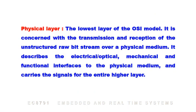The physical layer is the lowest layer of the OSI model. It is concerned with the transmission and reception of unstructured raw bit streams over a physical medium. It describes the electrical, optical, mechanical, and functional interfaces to the physical medium, and carries the signals for all higher layers.